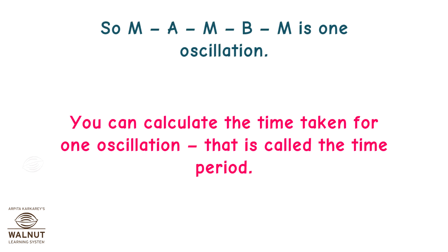So M, A, M, B, M is one oscillation. You can calculate the time taken for one oscillation. That is called the time period.